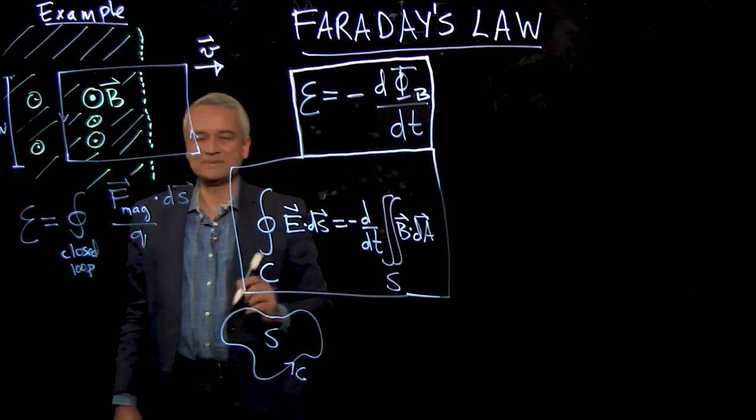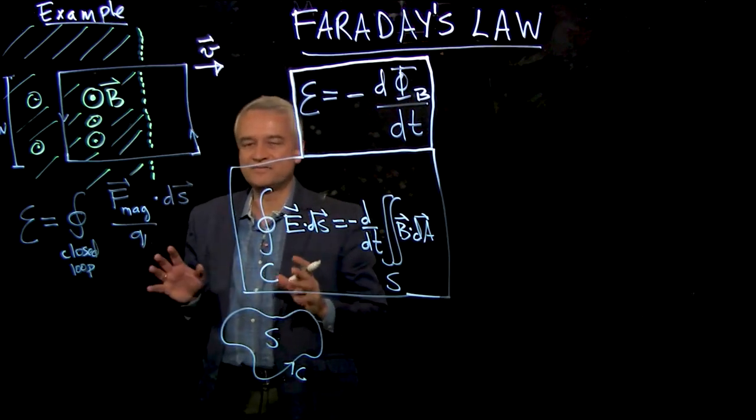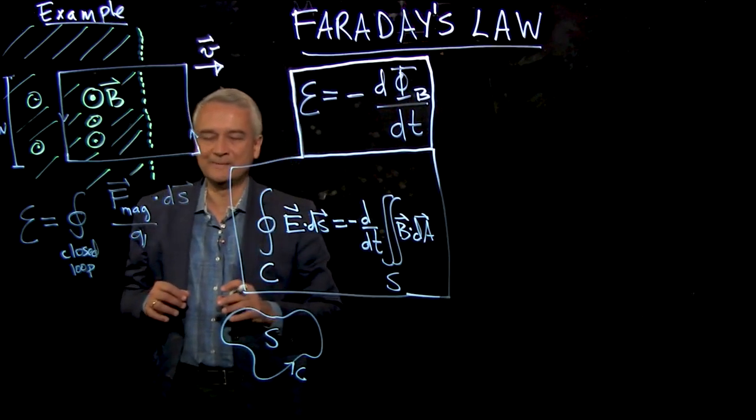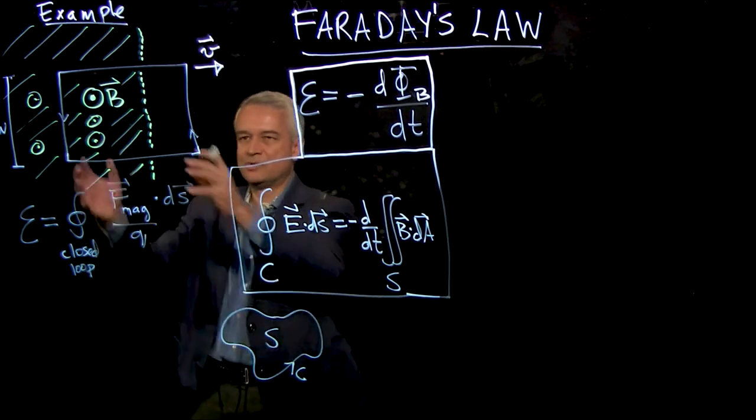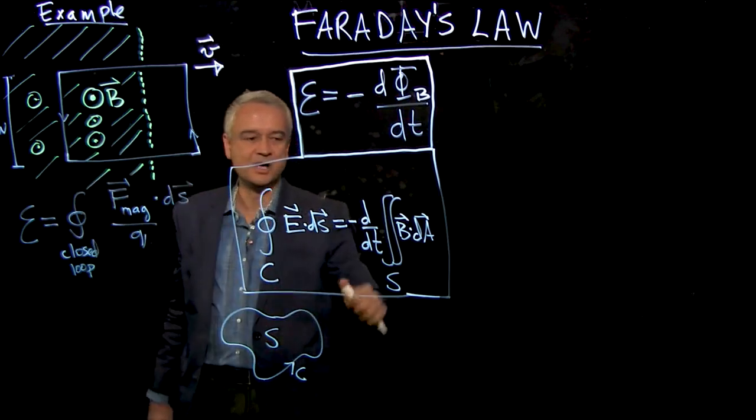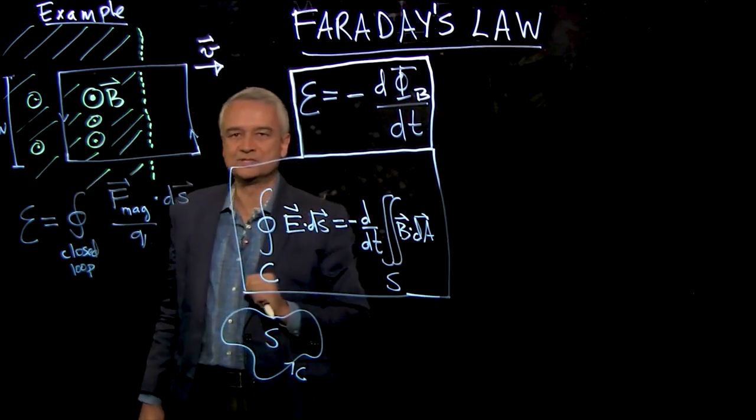And I want to stress one aspect of this generalization. Really, I've done two generalizations in one. The first generalization is to say it doesn't matter who's moving. It doesn't matter whether the loop is moving or the field is changing. All that matters is that the flux through the loop is changing.